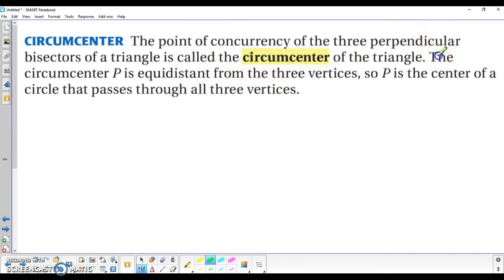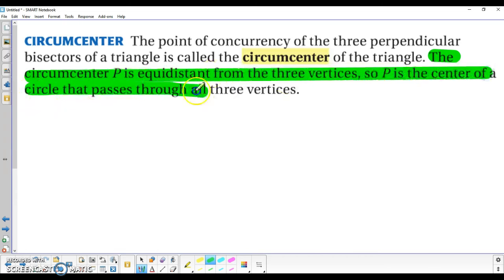Now one interesting fact, and this is another good way to check your accuracy when you're creating this yourself, is that the circumcenter actually ends up being equidistant, which means the same distance from all three vertices of your triangle. So going back to my drawing here,